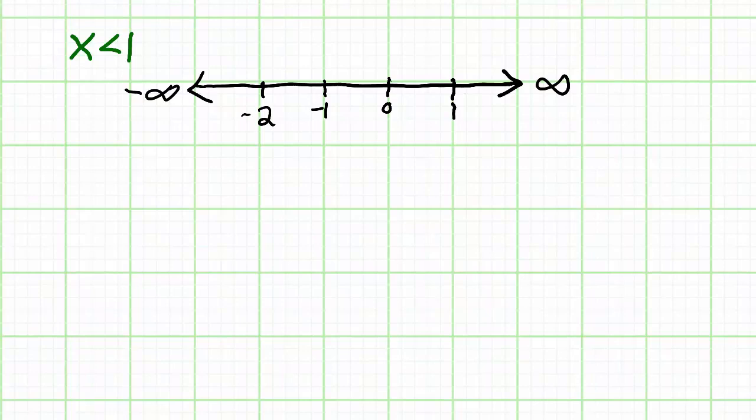Now, because this is a strict inequality with no line underneath the inequality sign, I make a parenthesis, and because the inequality sign points to the left, the arrow in my graph will point to the left as well, noted with the pink markings.